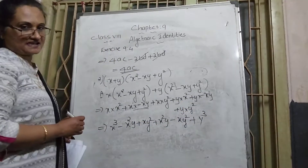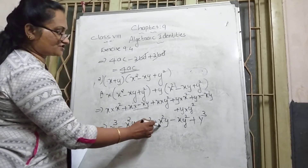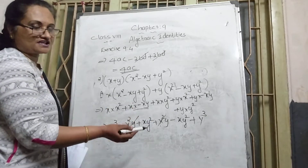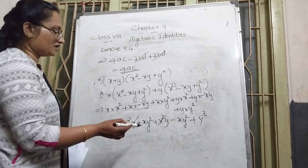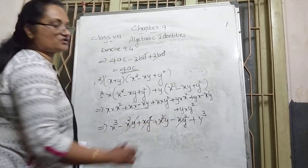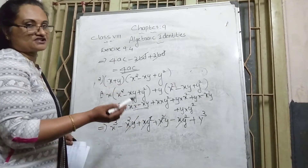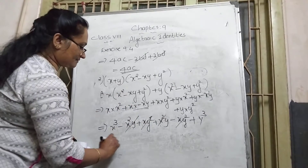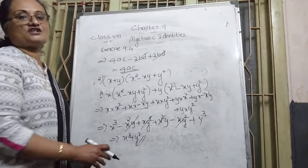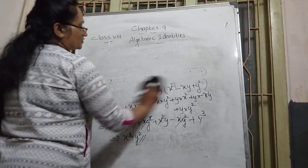Now cancellation: −x²y + x²y cancels (coefficients −1 + 1 = 0). Also +xy² − xy² cancels (coefficients +1 − 1 = 0). So the final answer is x³ + y³. This is the meaning of this question — I hope you can understand.